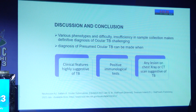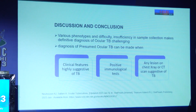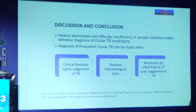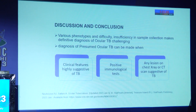Various phenotypes and difficulty in sample collection make definitive diagnosis of ocular TB challenging. The diagnosis of ocular TB can be made based on clinical features highly suggestive of TB with positive immunological tests supporting, or any lesion on the chest X-ray or CT scan suggestive of TB.